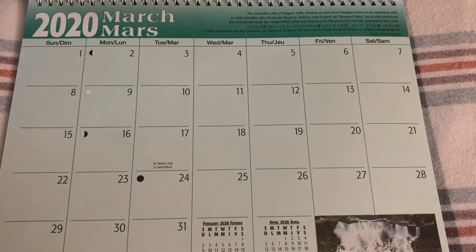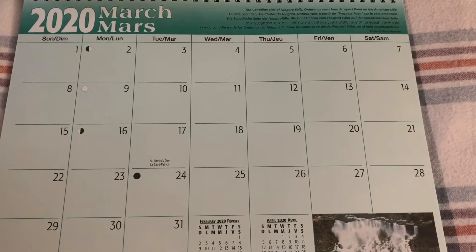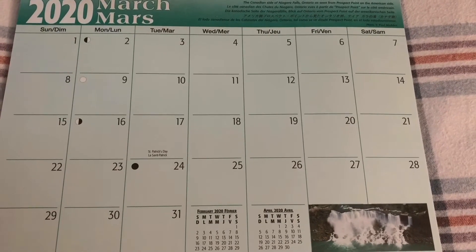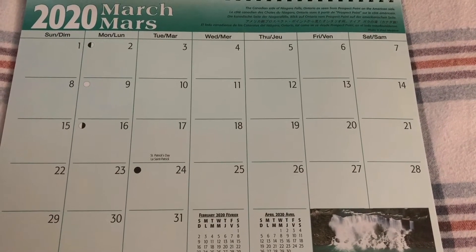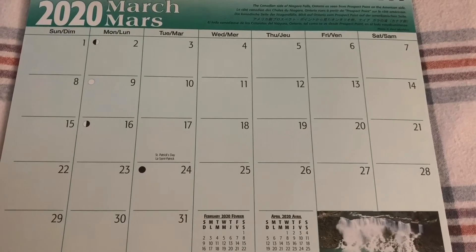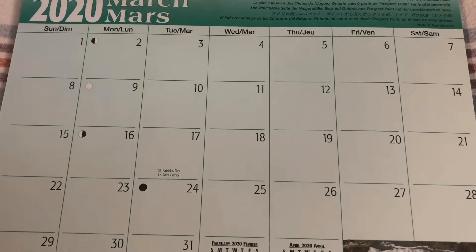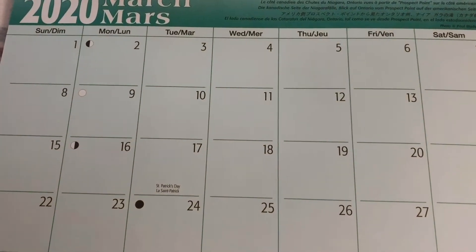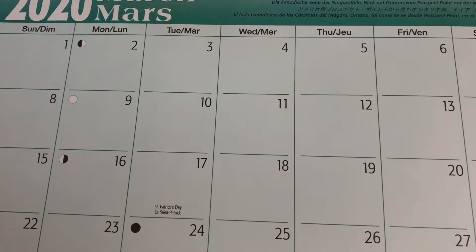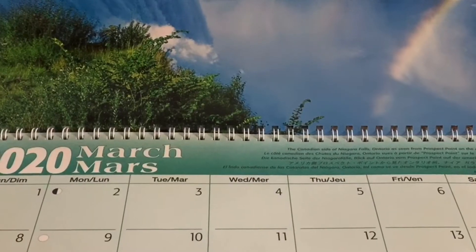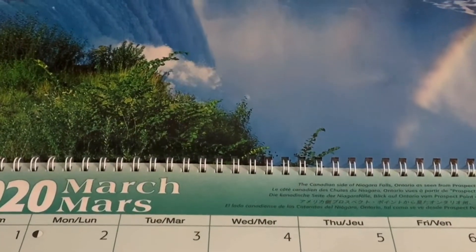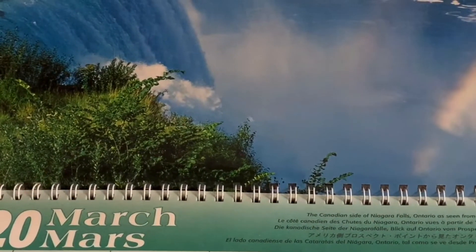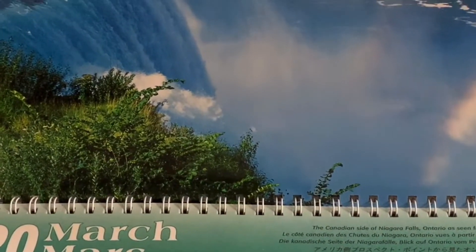This is March. It starts on Sunday and then it ends on Thursday. There are 31 days. A special day in the month is St. Patrick's Day, which is on March 17th. Look at the picture. It's the Canadian side of Niagara Falls, which is in Ontario, viewed from Prospect Point on the American side.